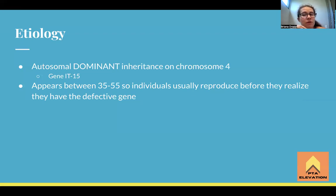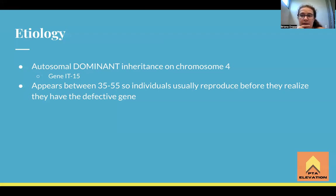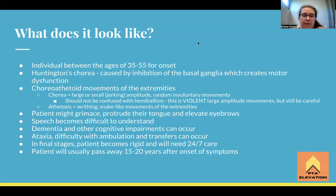A lot of people don't even realize they have this condition until they're between the ages of 35 and 55. By that point, many individuals who wanted to have children have already had them, so they've unknowingly passed this on to their offspring, which causes concern within the family about who else may have inherited the gene. That pattern of inheritance is important to know for the boards, as there are other conditions with different inheritance patterns — don't get them confused.